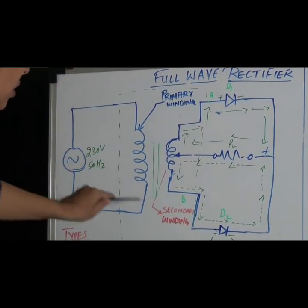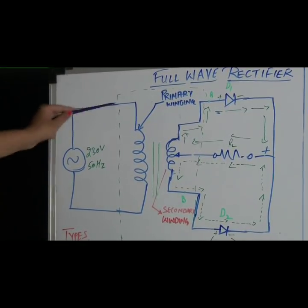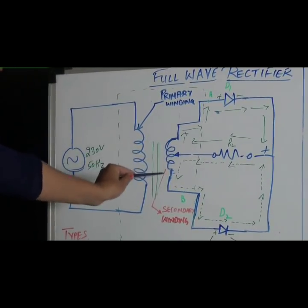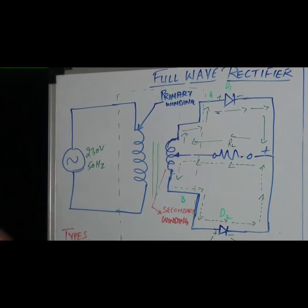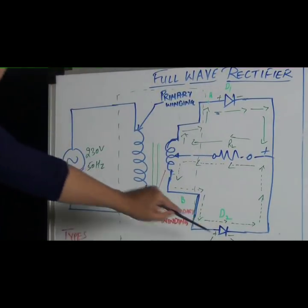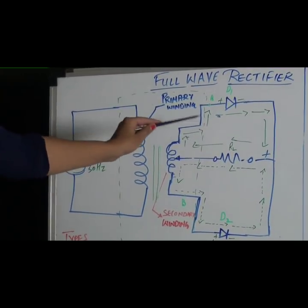This step down transformer works on the principle of mutual inductance. When the current through this primary coil changes, the magnetic flux linked to the secondary coil changes and an EMF is induced into the secondary coil, and a current starts flowing into the circuit. So it works on the principle of mutual inductance.